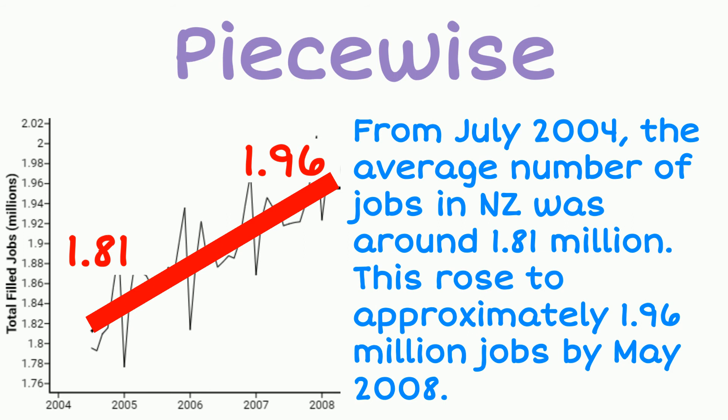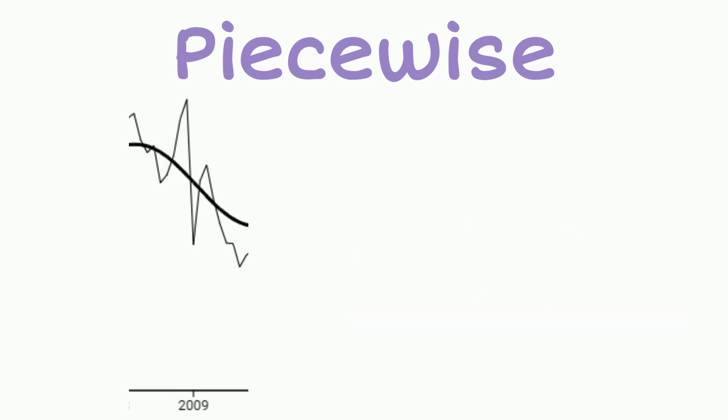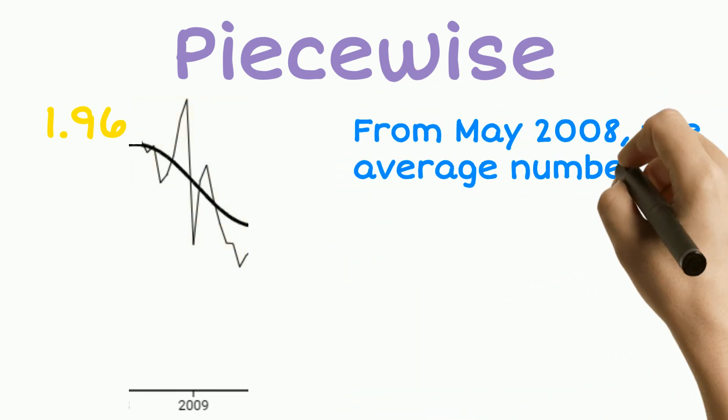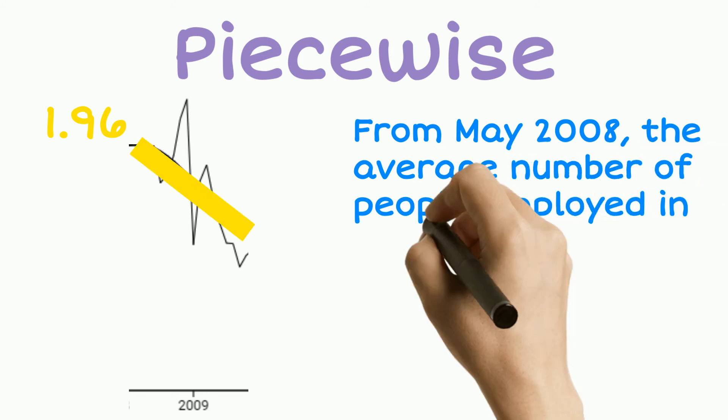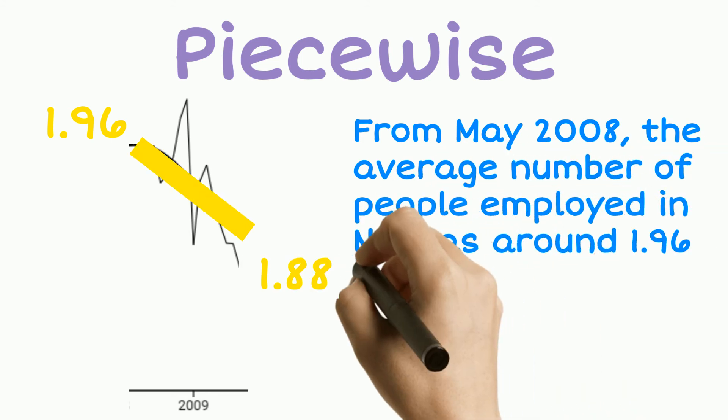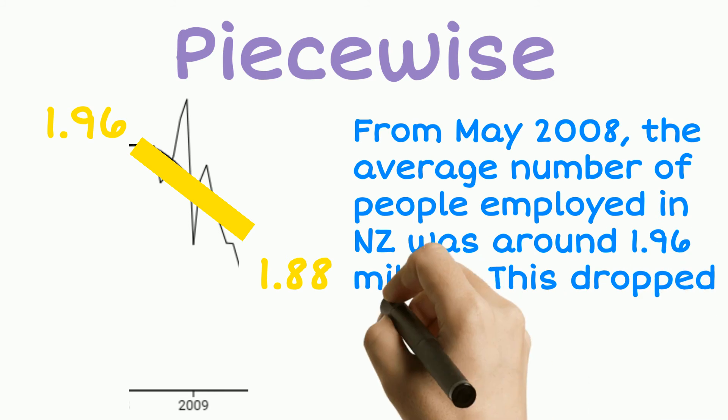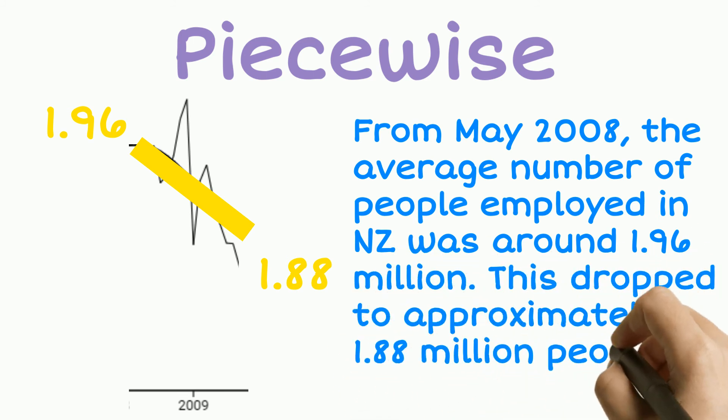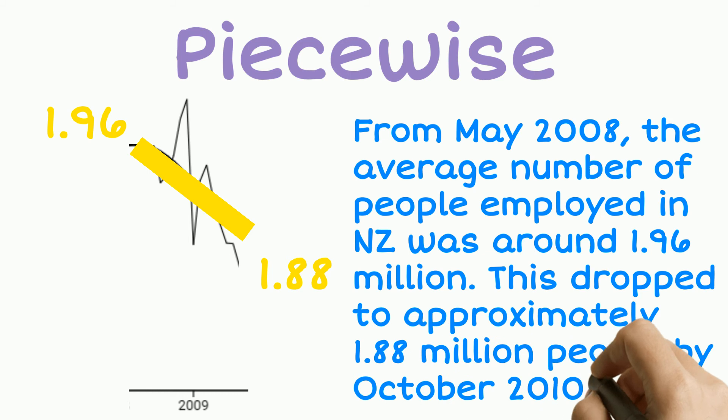Now let's have a look at section two. So from May 2008, the average number of people employed in New Zealand was around 1.96 million people. And this dropped to an average of 1.88 million by October 2010.